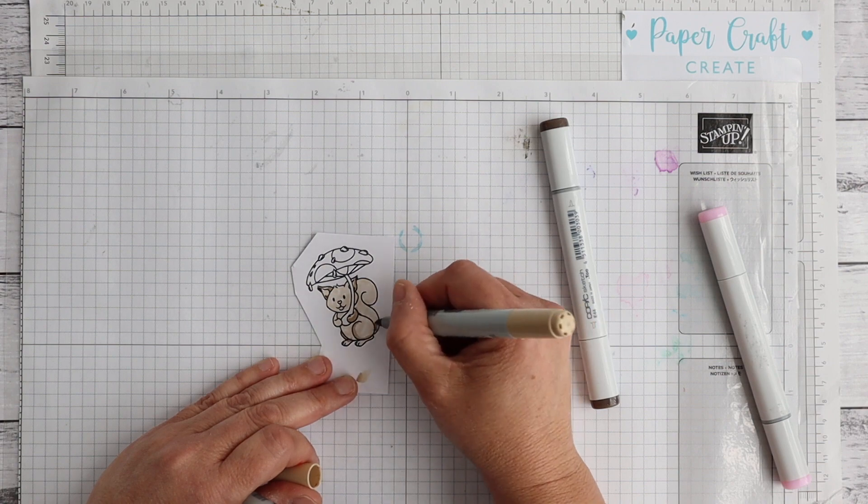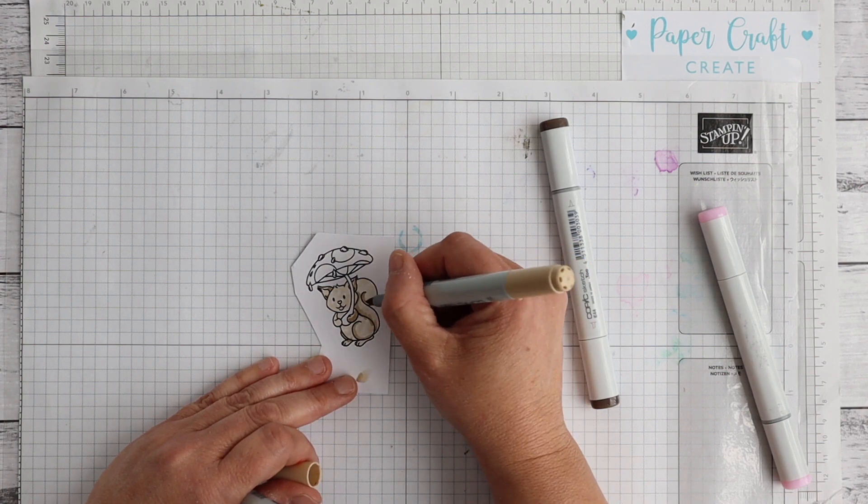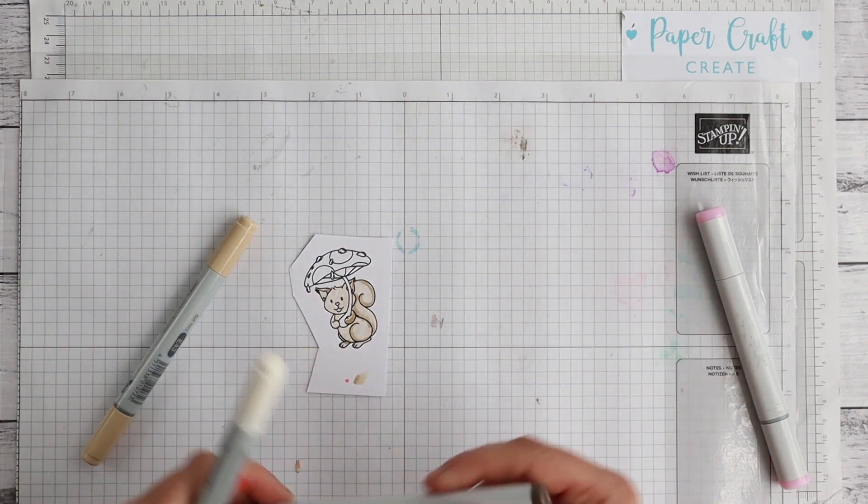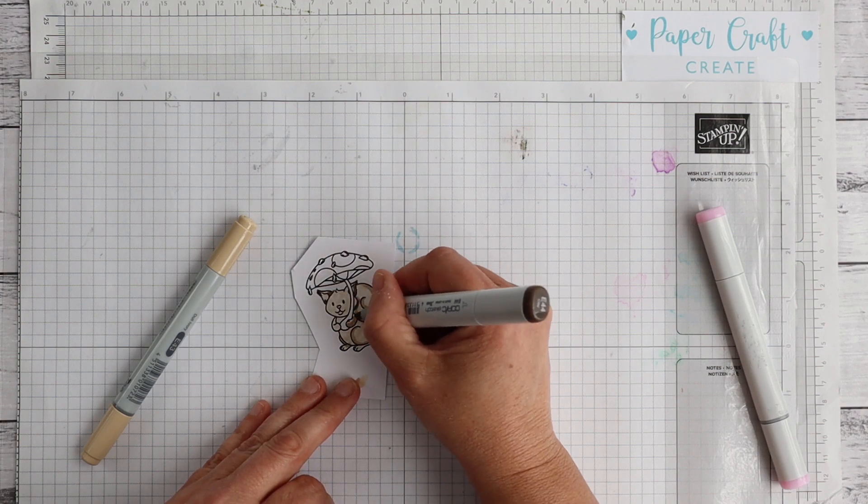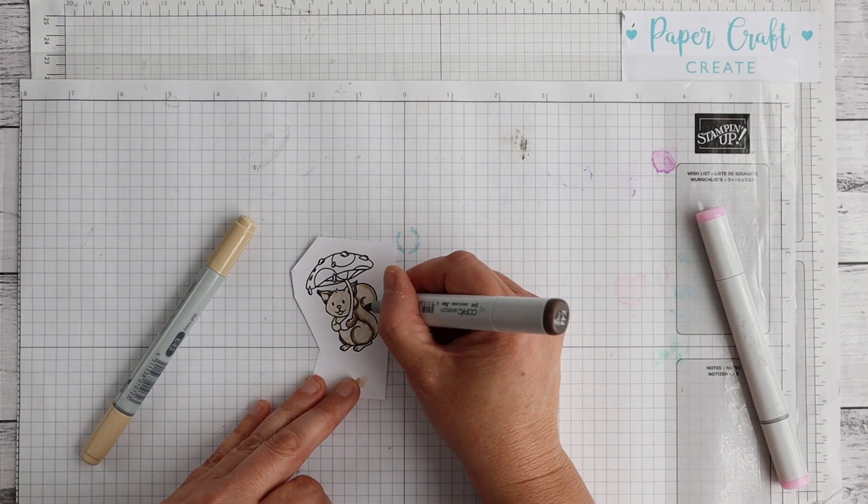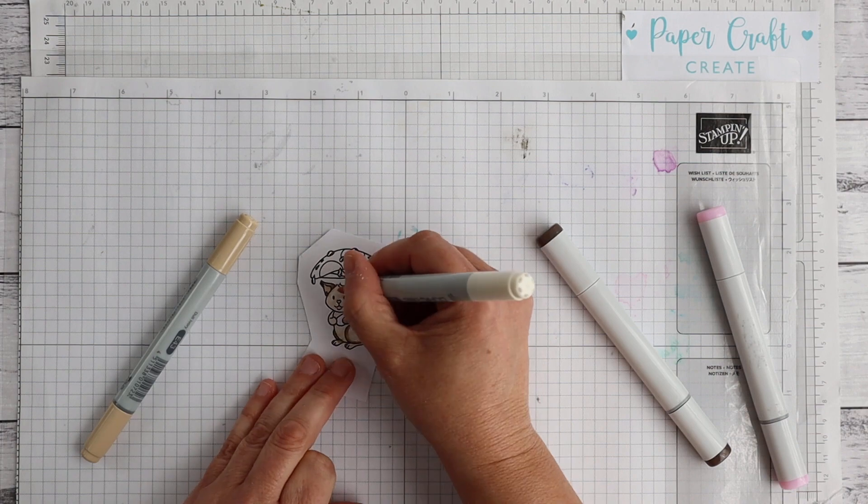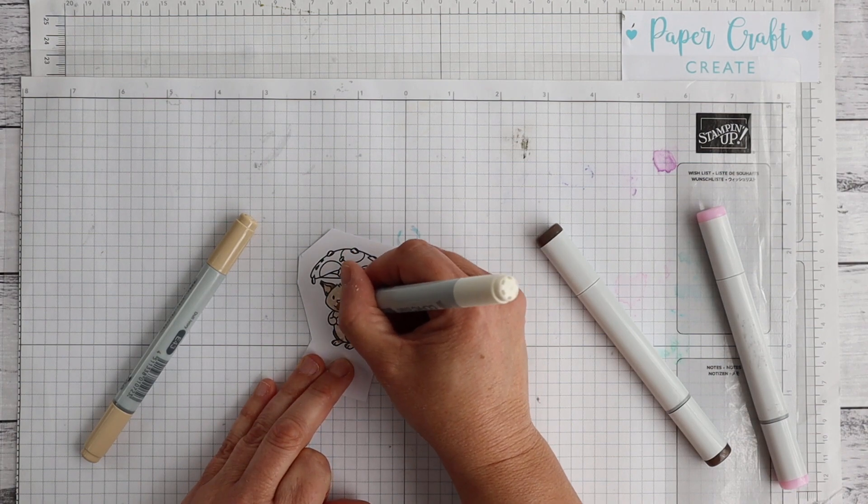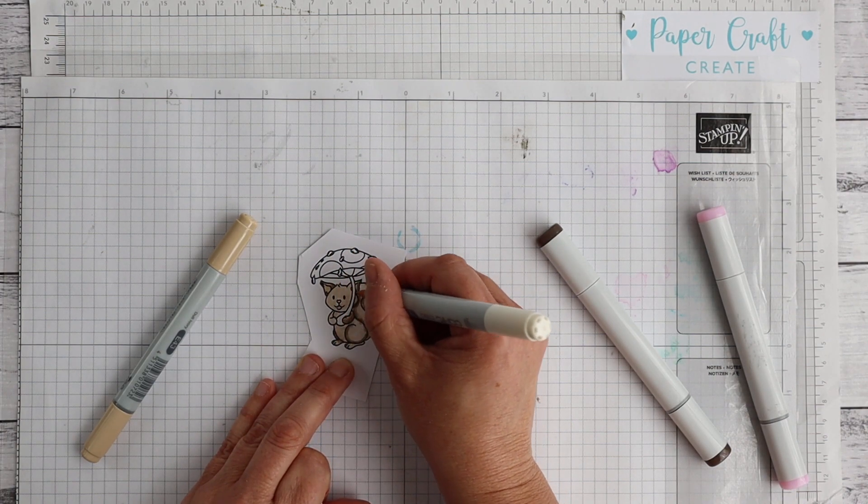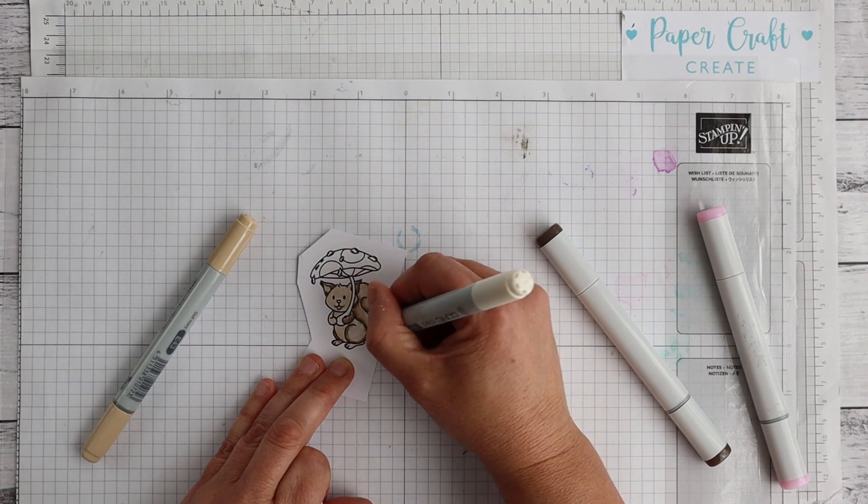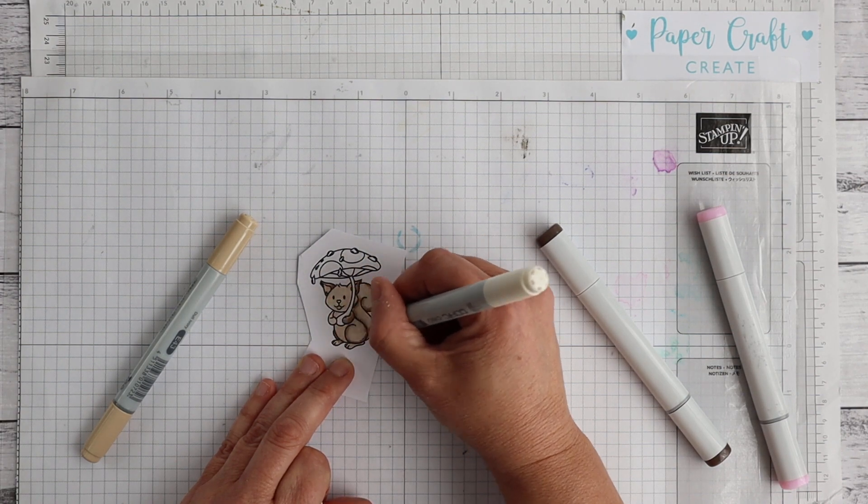So to start with I will be coloring this image as you can see with Copic markers. I've stamped this gorgeous little critter on some Express It blending cardstock and I'm just going to color it in. I thought I'd show the process because sometimes it can be a little daunting.